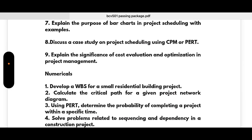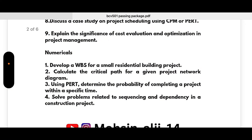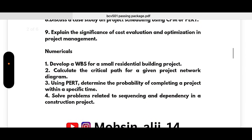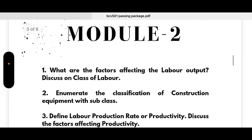These are the theoretical questions from Module 1. For numericals: develop a WBS for a small residential building project; calculate the critical path for a given project network diagram using CPM; for a given project network diagram, use PERT to determine the probability of completing a project within a specific time; and solve problems related to sequencing and dependency in a construction project.